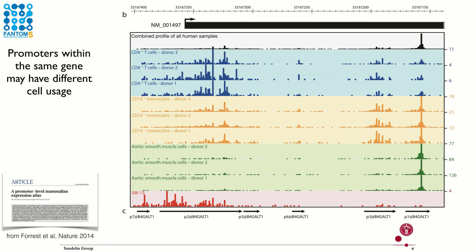We can observe that there are at least two different larger start site clusters which display different cell usage preferences. The T and SW13 cells use the left cluster, the aortic smooth muscle cells use the right cluster, and the monocytes use both. So even a single gene may have multiple promoters with different cell usage, and depending on the cell of interest, different promoters should be selected for further analysis.